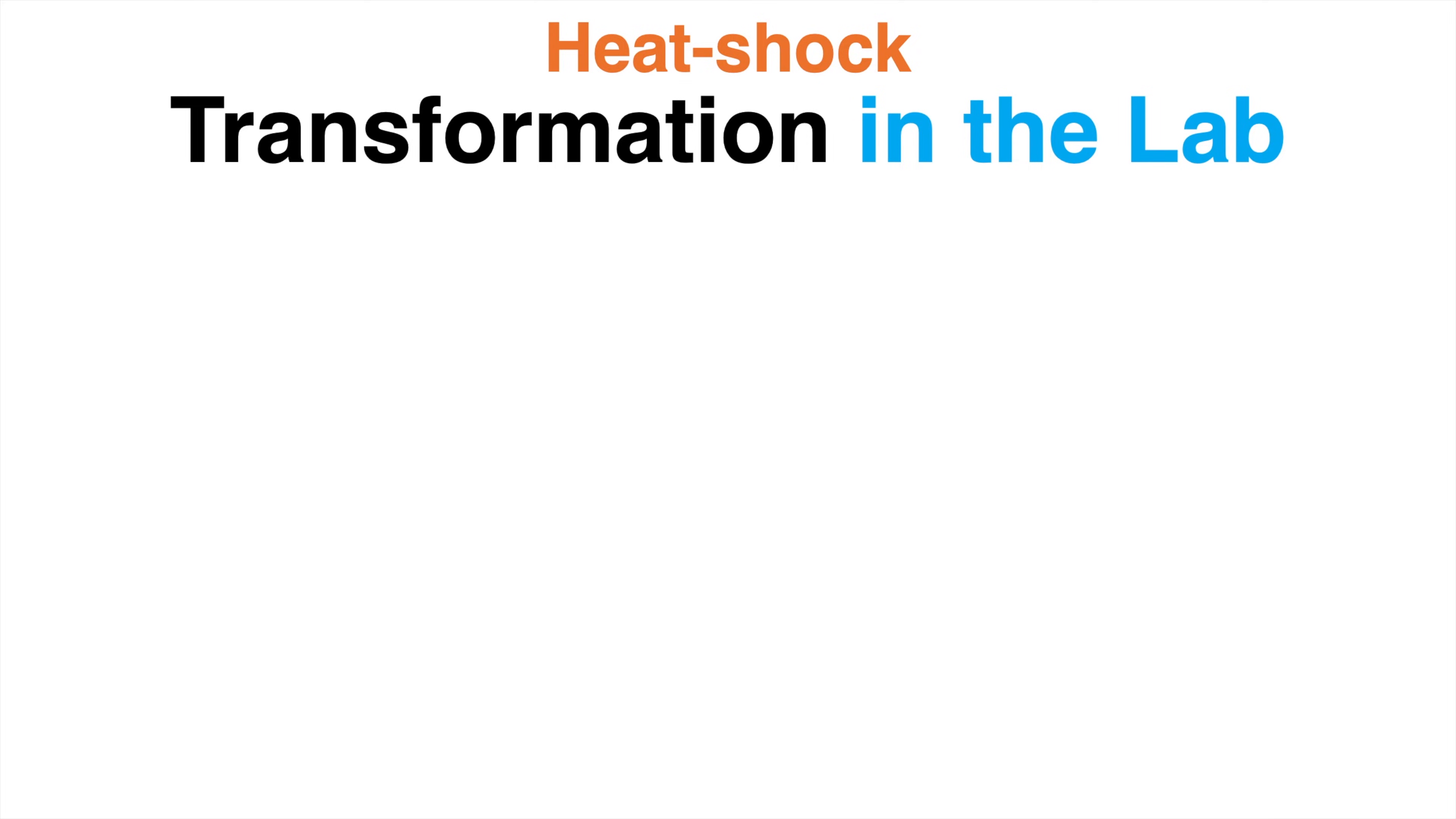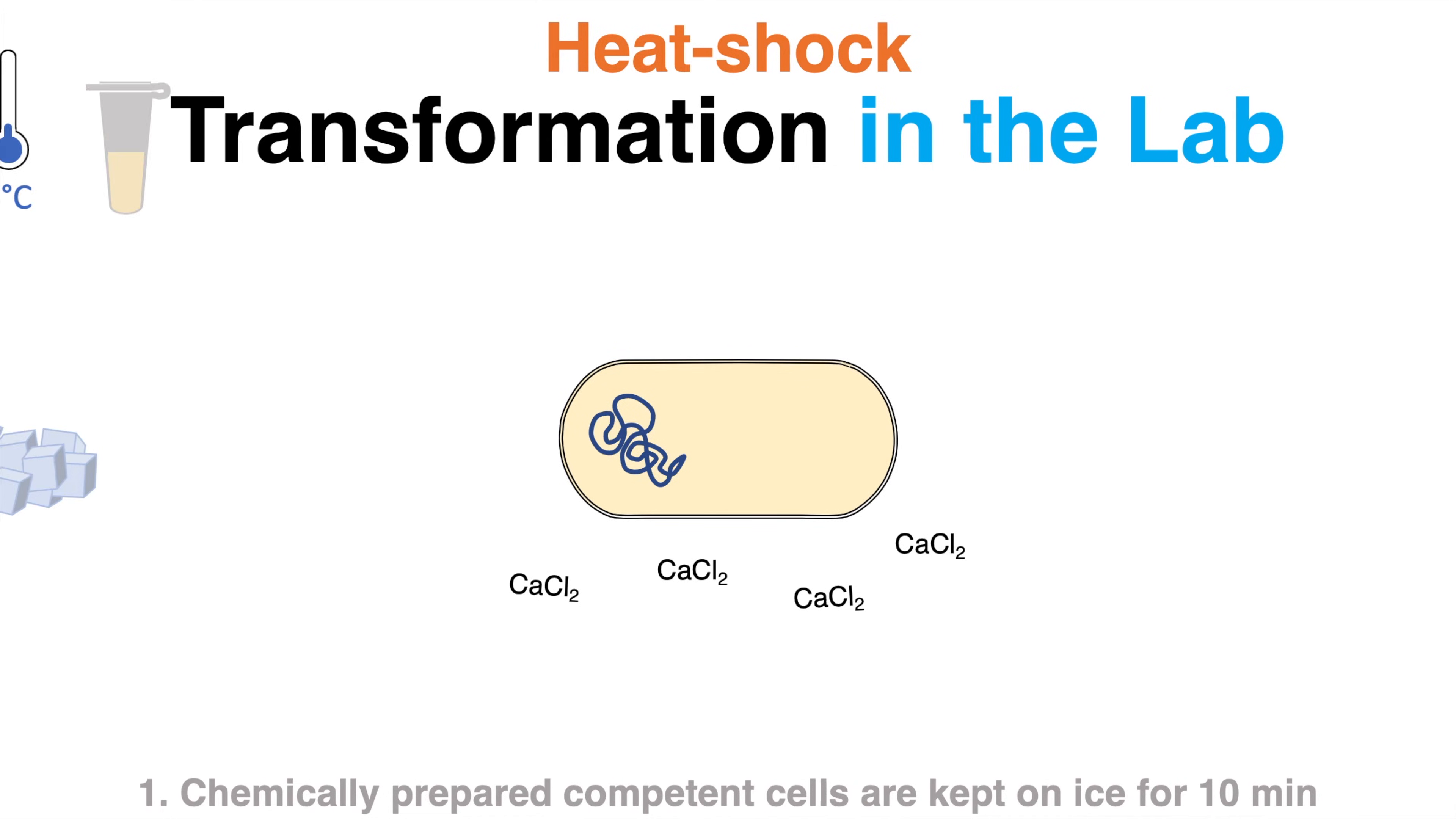To make cells able to take up plasmid DNA we must induce competence. Cells are chemically prepared to be competent by calcium chloride treatment. The first step now is to keep these competent cells on ice for about 10 minutes.